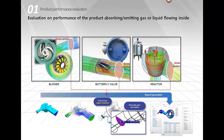Going into more detail on the types of analysis you can do: CFD is very useful to evaluate the performance of products absorbing or emitting gas or liquid. Examples include the blower, the butterfly valve, and reactors — all of which can be analyzed in CFD.